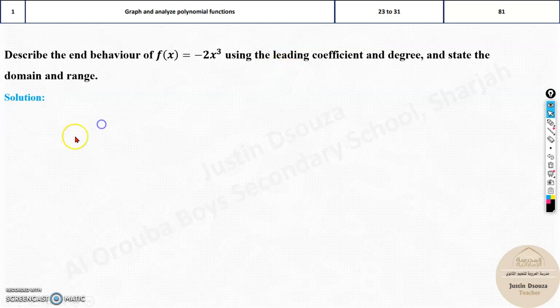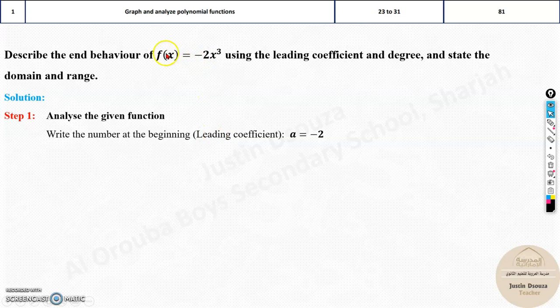Now one by one, what is the leading coefficient? So by analyzing, leading coefficient is whatever is at the beginning. Now some students do mistake this to be only 2. So don't forget it. Whatever the sign is there, that also must be included. It is A equals minus 2. So make sure you even include the negative sign, negative 2.